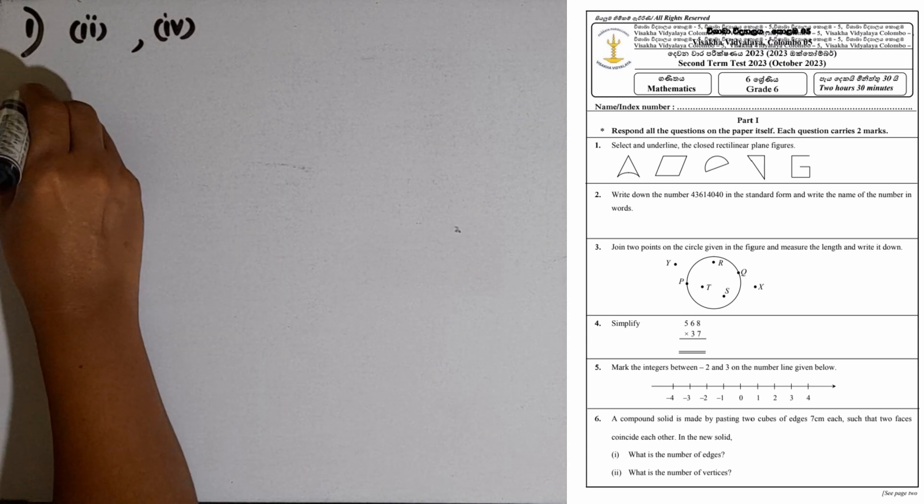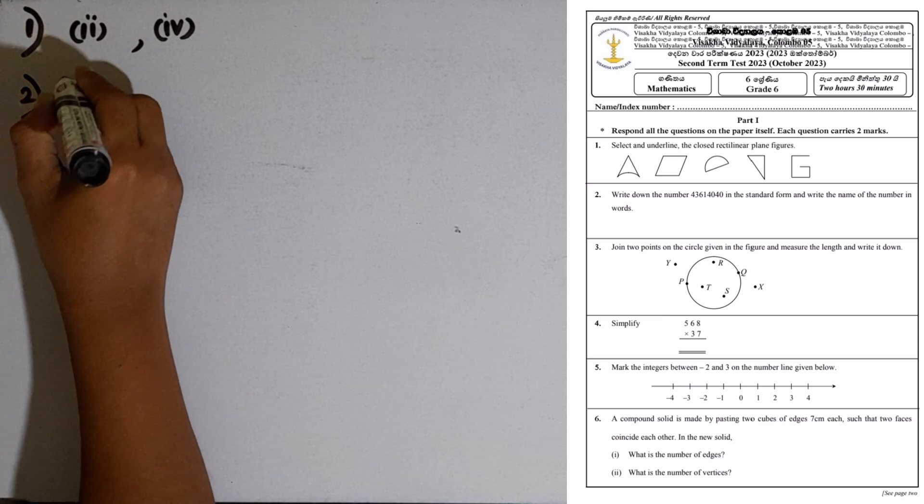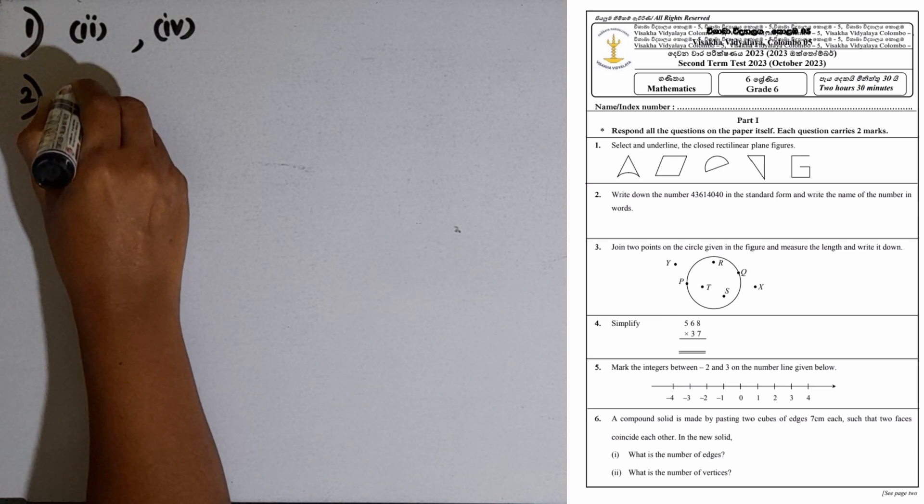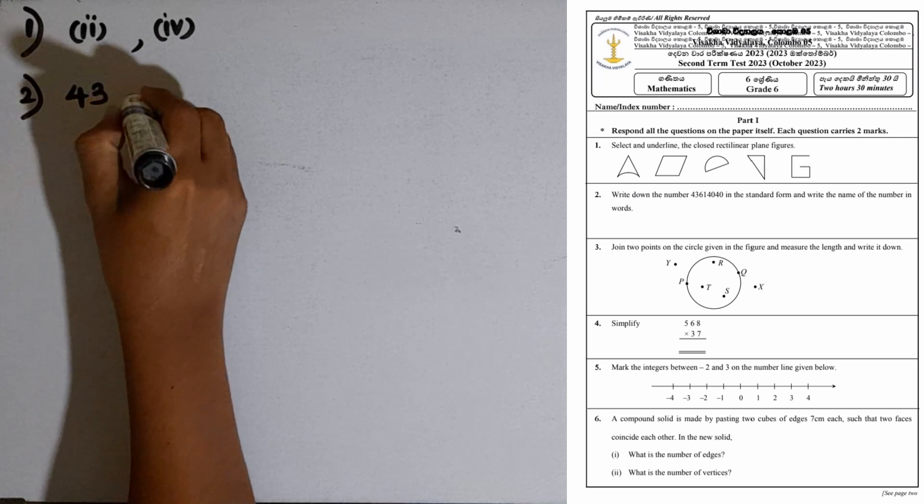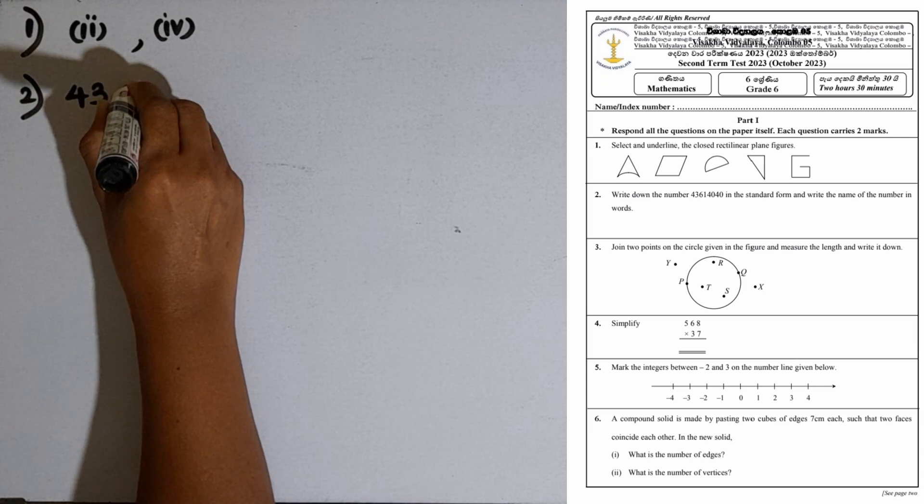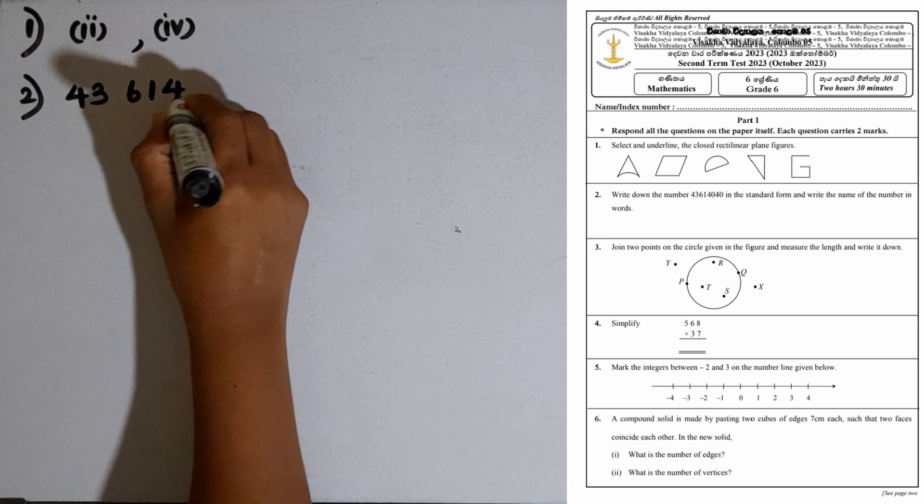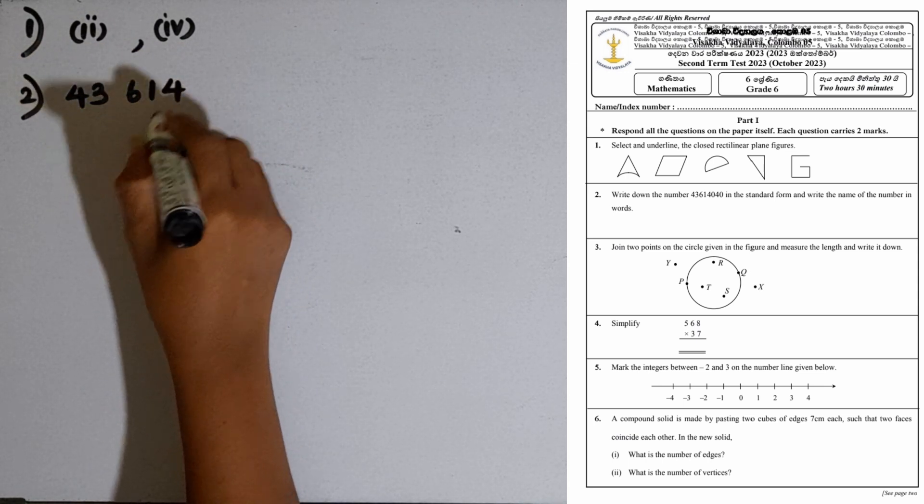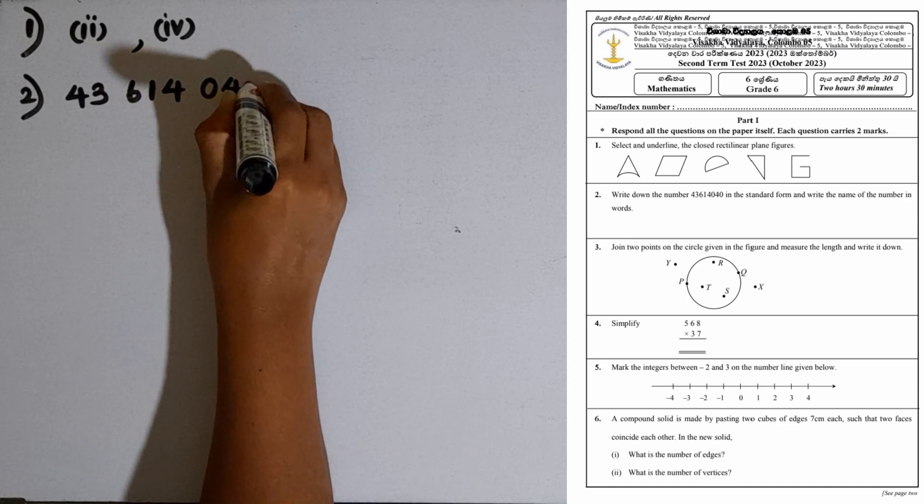Second question: Write down the number in standard form and write the name of the number in words. We can separate this median zone, then put a small gap here, then again a small gap. This is the thousand zone, then other three digits in the unit zone.